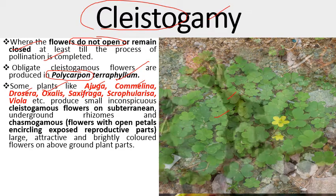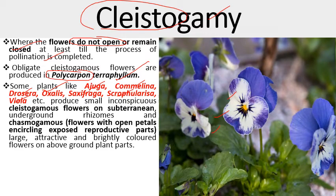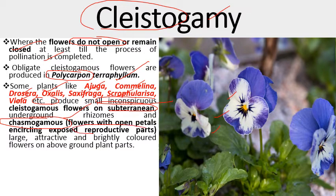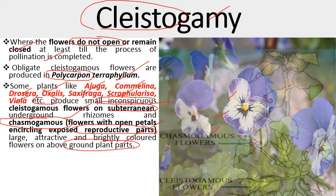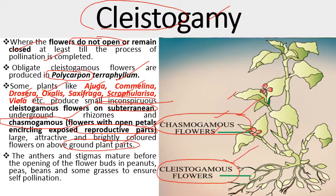Other examples include Saxifraga and Viola (also known as pansy). These plants produce small, inconspicuous cleistogamous flowers on subterranean or underground rhizomes. Cleistogamous flowers are those which have petals enclosing and encircling the reproductive parts — closed flowers. The above-ground part is produced by attractive and brightly-colored chasmogamous flowers. Commelina, for example, produces chasmogamous flowers in the above-ground part and cleistogamous flowers in the below-ground part.